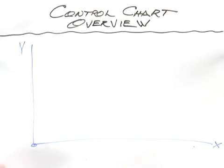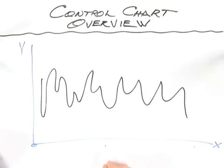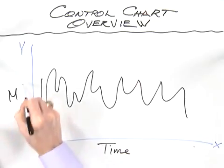Let's now take a look at how we actually analyze and interpret a control chart. You'll remember we had our data plotted over time. Time is on the horizontal axis and our measure of interest is on the vertical.